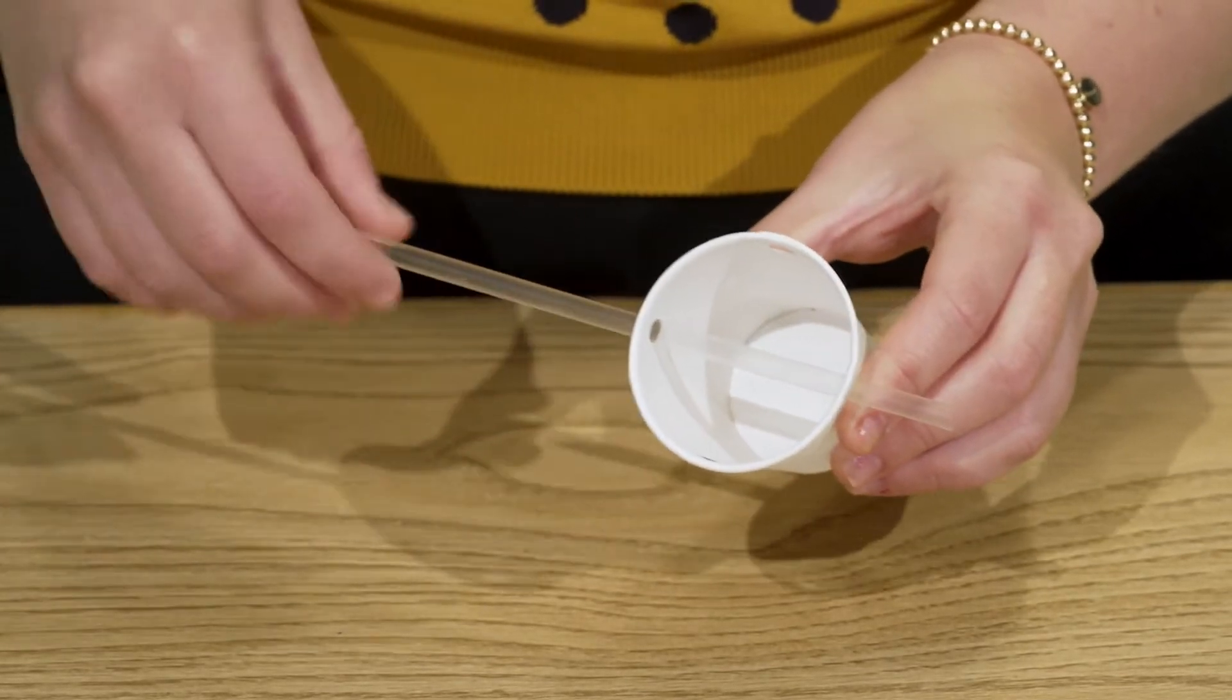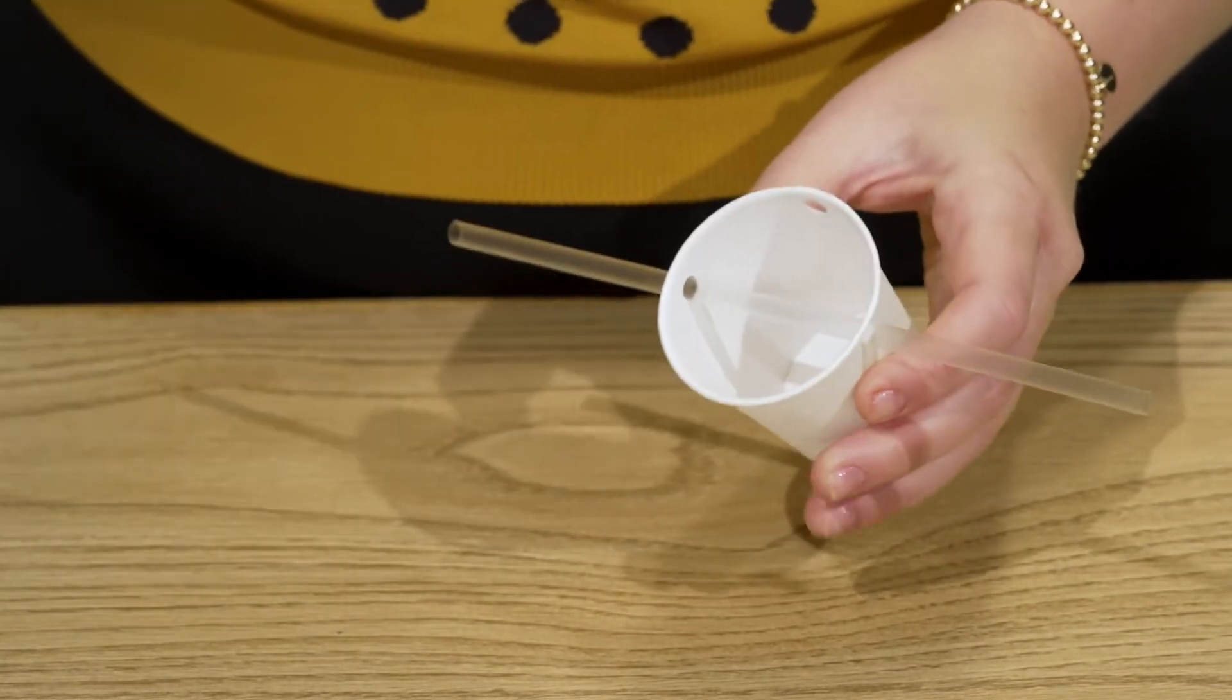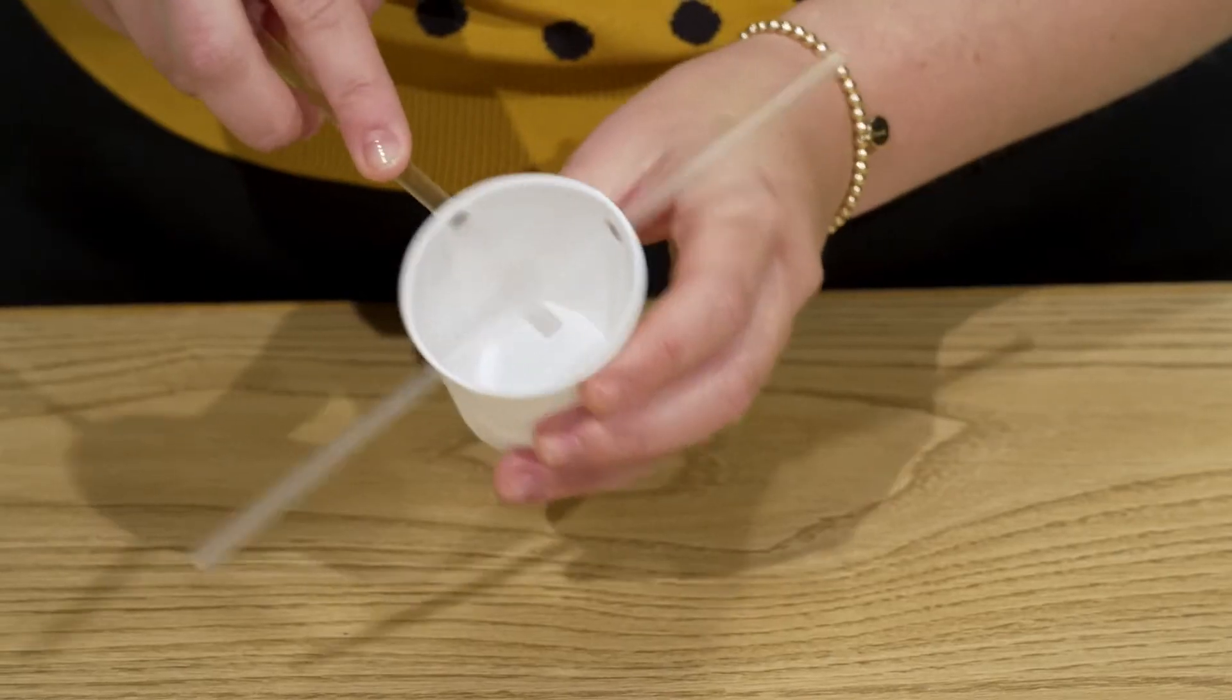Next, take your two straws and thread them through the holes in the cup so they crisscross, making a plus sign or an X.